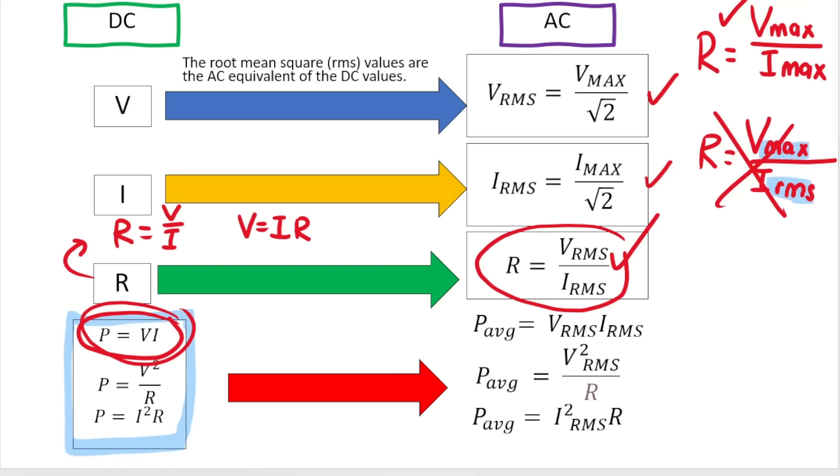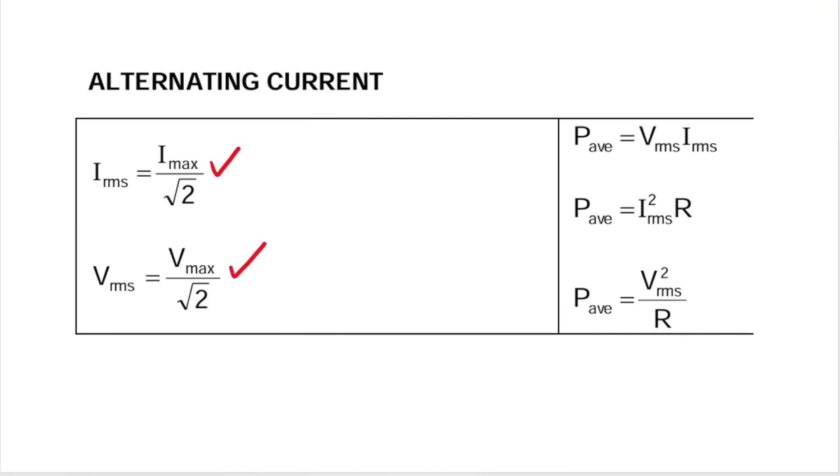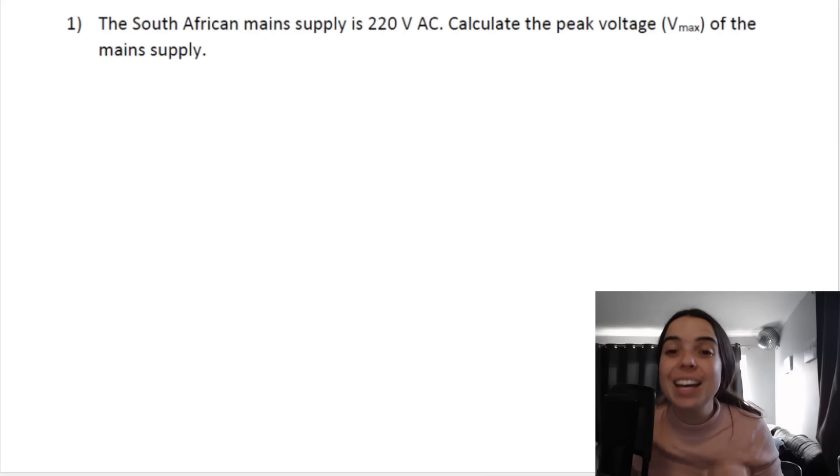All these formulae, like I said, are given to you on the formula sheet with the exception of this one. That one is not given to you. Take a look. It's not there. So how do you know? How are you going to remember it? Well, it's just the normal R is equal to V over I, but you are allowed to use RMS and RMS, or you can use V max and I max. So this one is just one you're going to have to keep in your back pocket and remember.